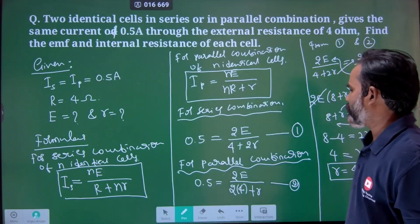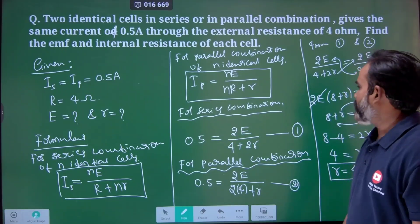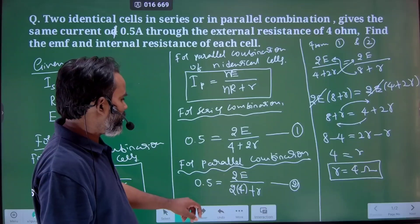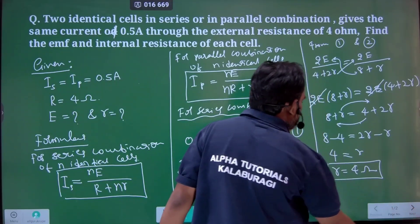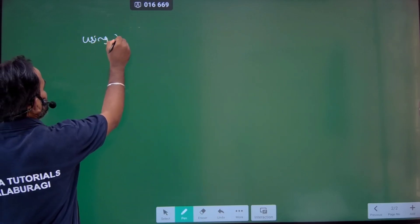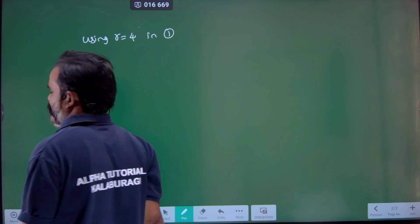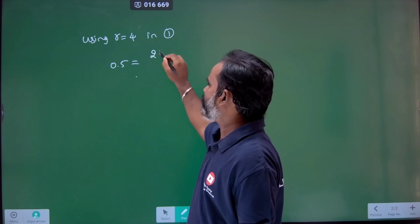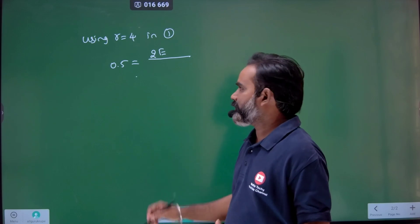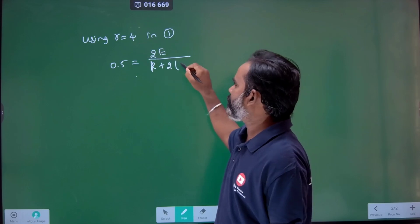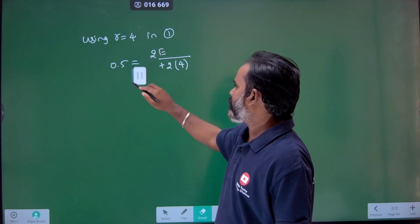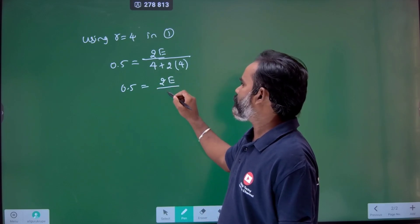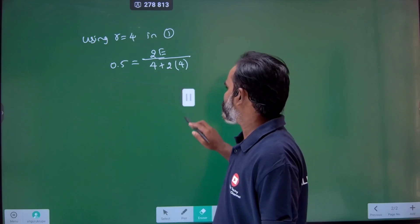Now that we know R equals 4 ohms, we can easily find E. Using equation number 1: 0.5 equals 2E divided by (4 plus 2r). Substituting r equals 4, the total resistance is 4 plus 2 times 4, which is 4 plus 8 equals 12.